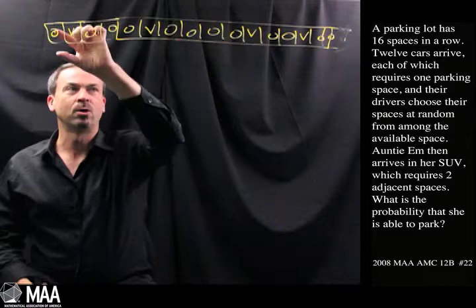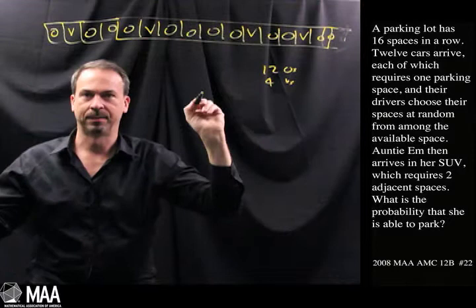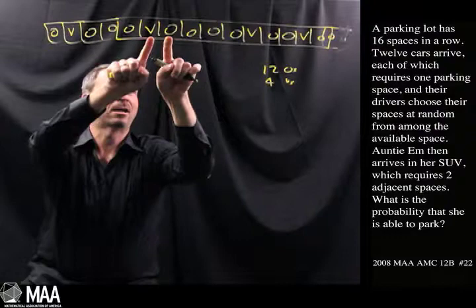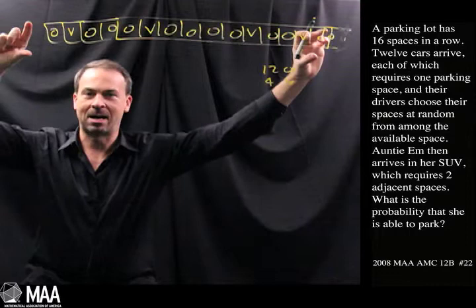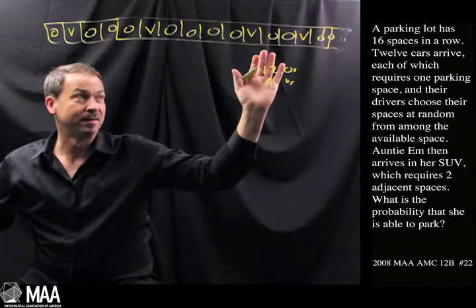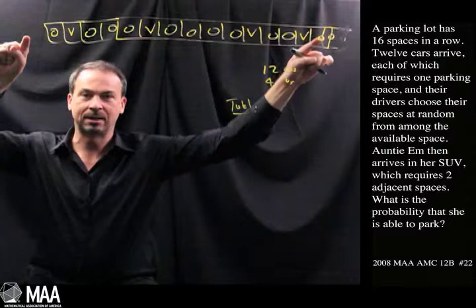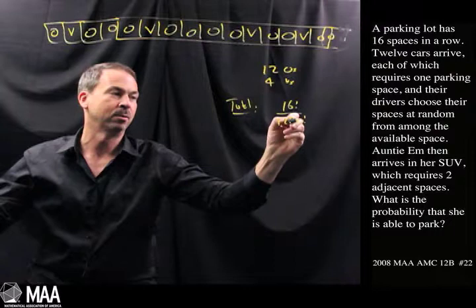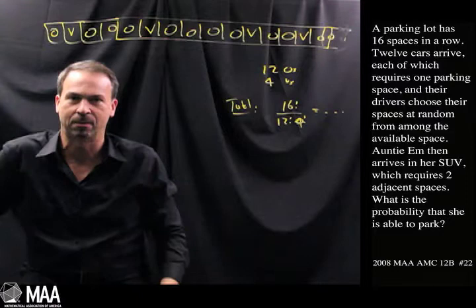This feels like a counting problem because basically any arrangement of occupied spaces and vacant spaces is a word that's 16 letters long, and there's going to be 12 O's and 4 V's. Some of these words are bad — like this one, that's bad for Auntie M — and some would be good, like if I had VV here, that would be good for Auntie M. So what I need to do is count how many good words there are for Auntie M and divide by the total number of words. The total number of possible configurations of 12 O's and 4 V's would be 16 factorial divided by 12 factorial and 4 factorial — 12 for the O's, 4 for the V's.